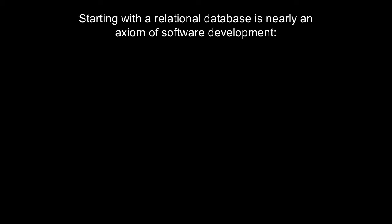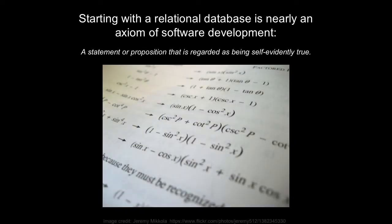Just to drive home how strong of a statement this is — an axiom — recall the exact definition: a statement or proposition that is regarded as being self-evidently true. It's just clear that you start from a relational database. So one of the things I hope you take away from this course is that the database style, the database engine, is a choice. It's a really important choice that has far-reaching implications for your application. I want to break this mold. Sometimes a relational database makes sense and is perfect, but a lot of times, as you'll see throughout this course, starting with a document database is actually a better choice.